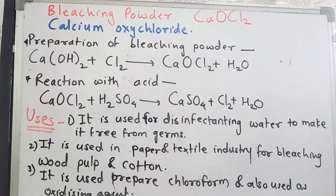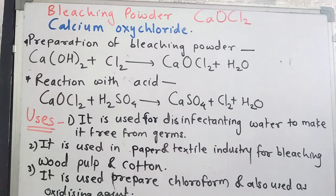The next salt is bleaching powder. The formula of bleaching powder is CaOCl2 — Ca for calcium, O for oxy, and Cl2 for chloride. Its chemical name is calcium oxychloride.